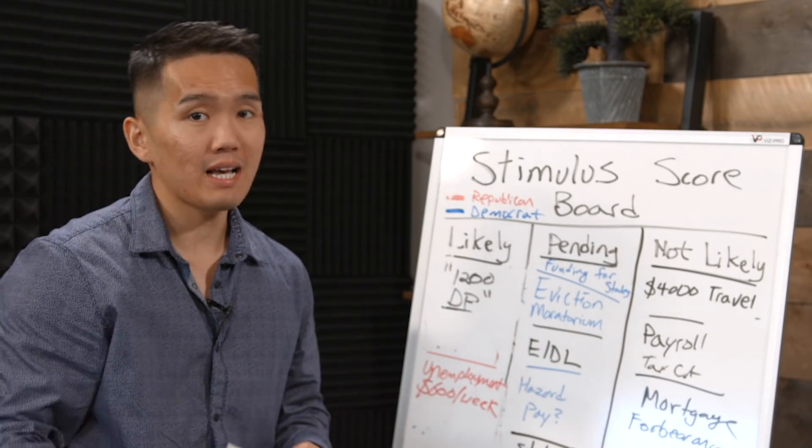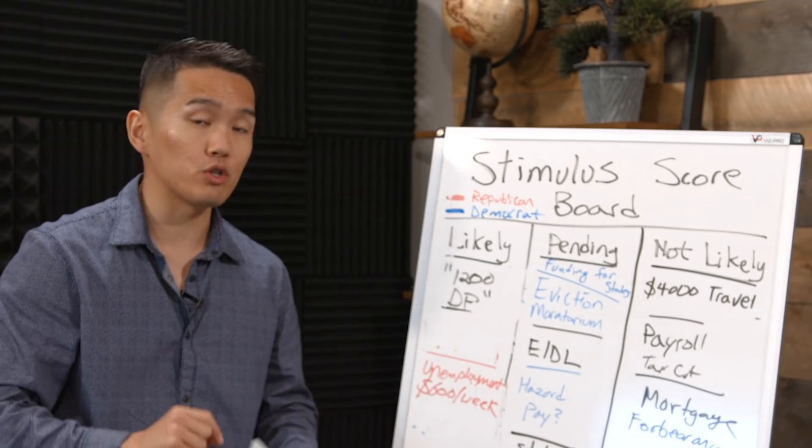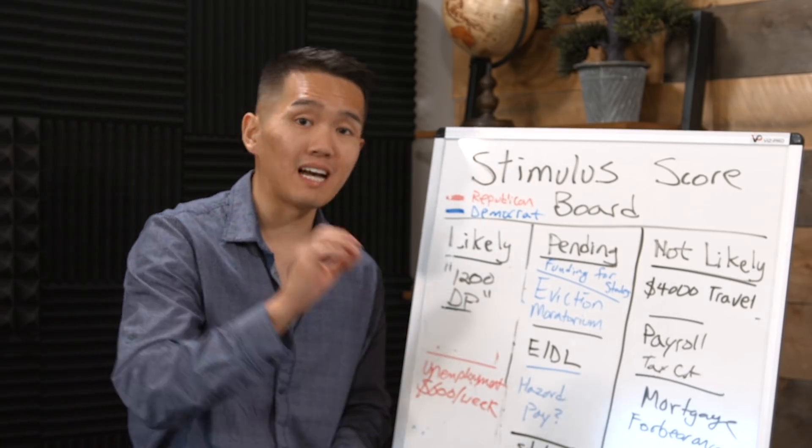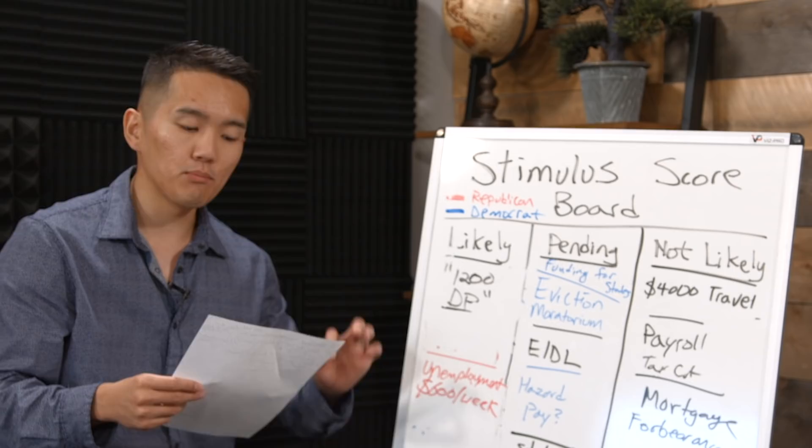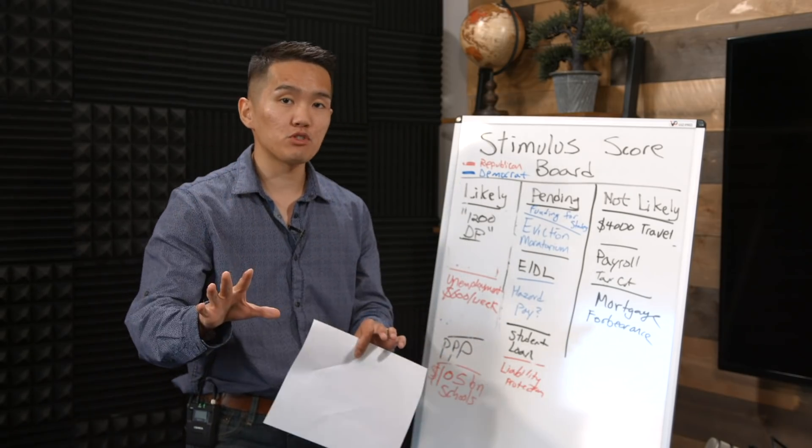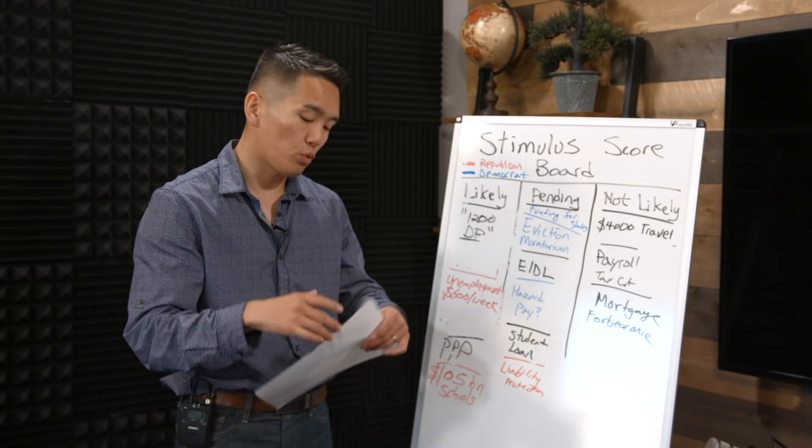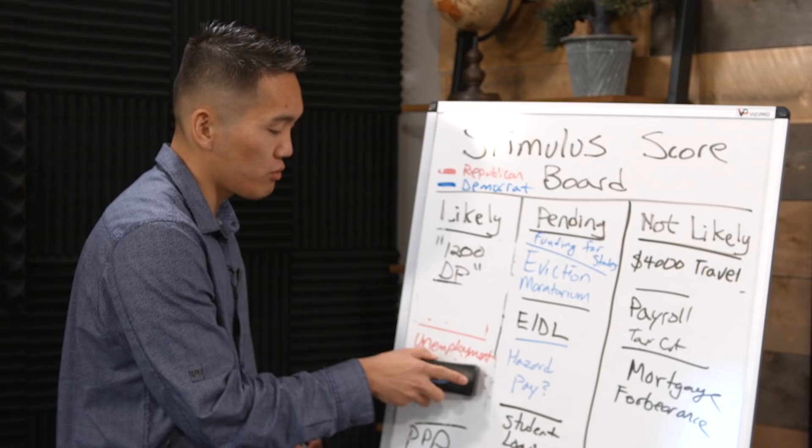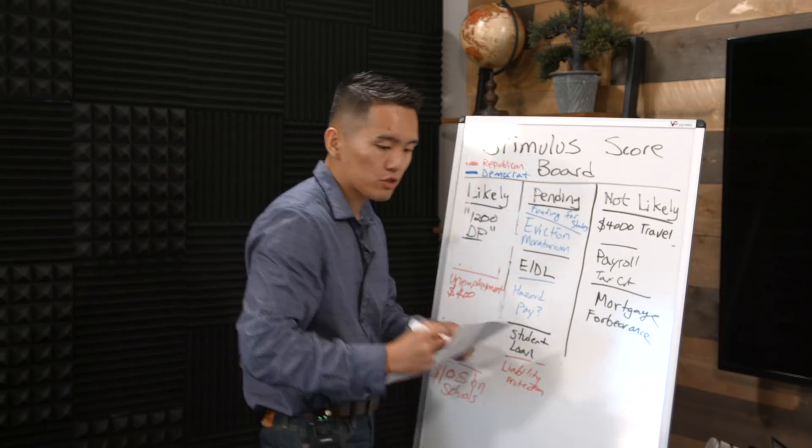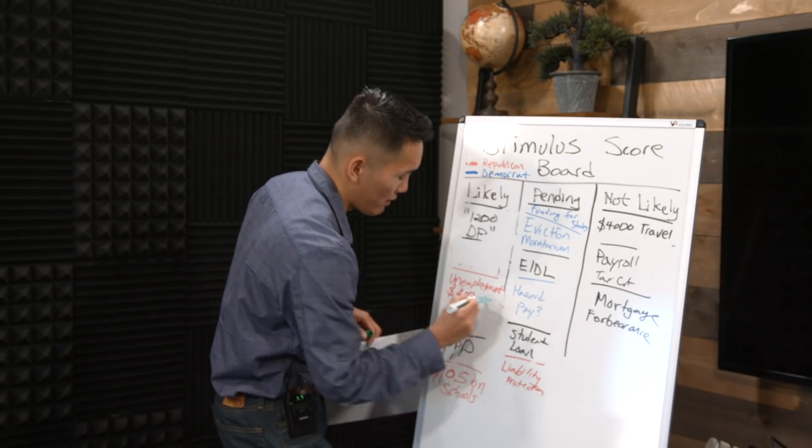The very first item that we need to cover is the unemployment benefit of $600 a week, which is no longer $600 a week. President Trump just signed an executive order directing $400 a week of unemployment benefit, which 75% will come from the federal government, and the states are asked to pitch in 25%. We're going to update the scoreboard and change this number to $400 a week, and we're going to put a green star on it, making sure you understand that this is an executive order.